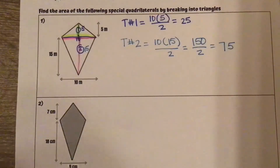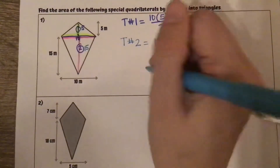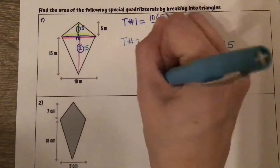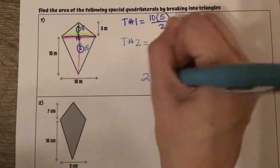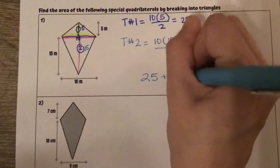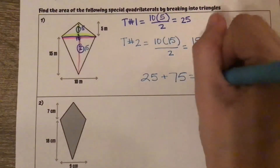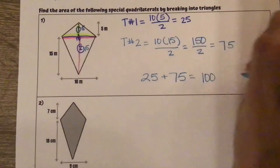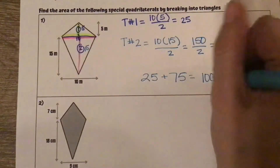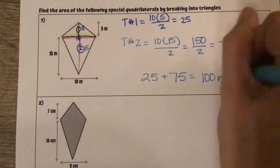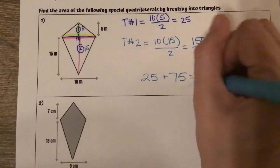And our total area, adding 25 plus 75, gives a total area of 100 meters squared.